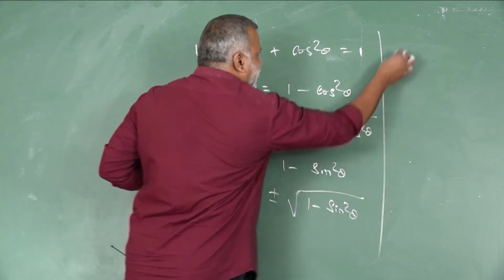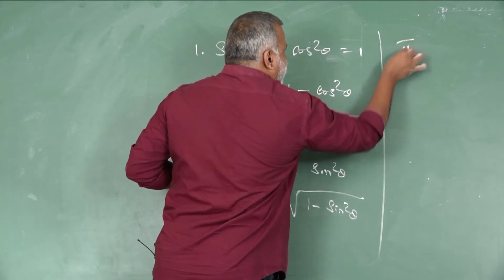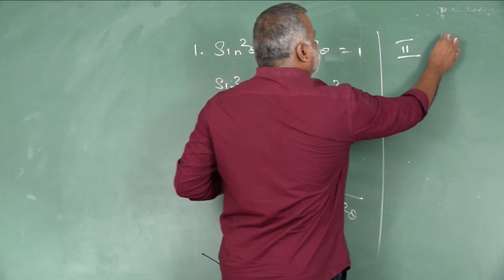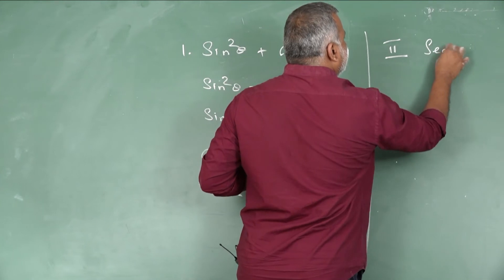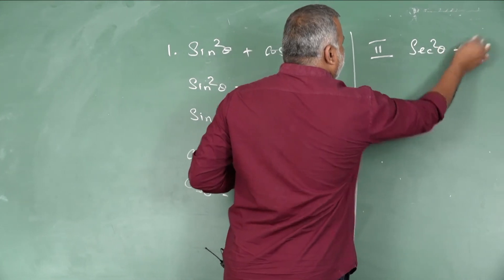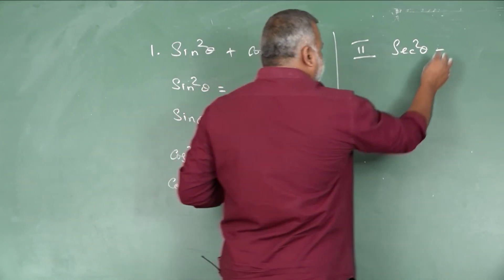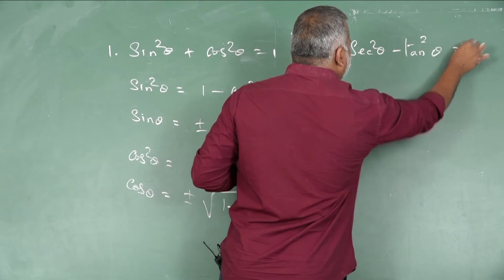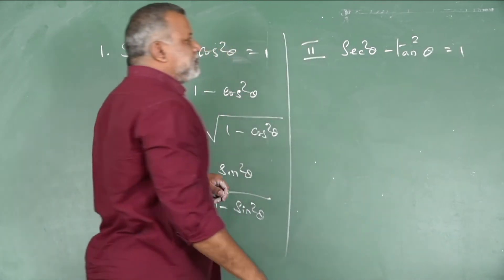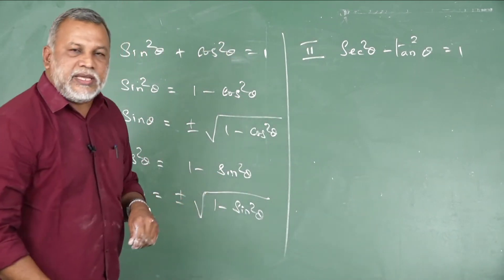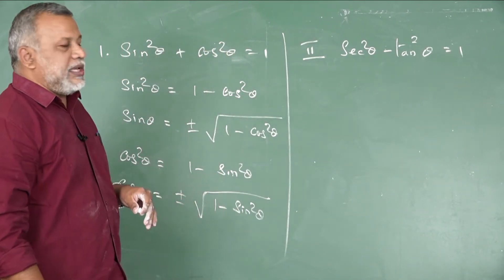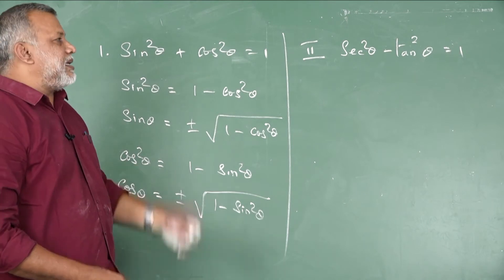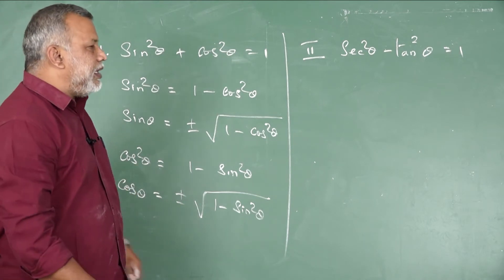Now the second result: sec²θ − tan²θ = 1. This is the second identity.